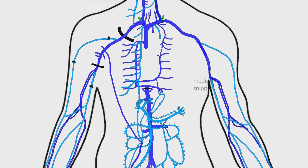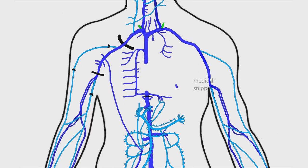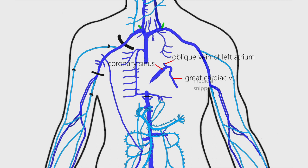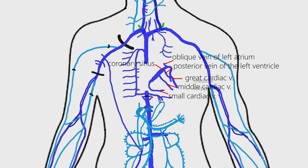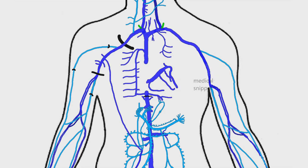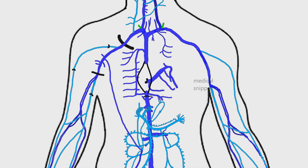Now let's discuss the cardiac venous drainage. The great cardiac vein and the oblique vein of the left atrium unite to form the coronary sinus. The great cardiac vein runs along the left anterior descending artery. The other tributaries of the coronary sinus are the small cardiac veins, the posterior vein of the left ventricle, and the middle cardiac vein. The middle cardiac vein runs along the posterior descending artery. The coronary sinus opens into the right atrium, often guarded by the thebesian valve. There are anterior cardiac veins which drain directly into the right atrium, and also venae cordis minimae, which open into different chambers of the heart via the foramina minimarum. This completes the venous system of the thorax and abdomen.